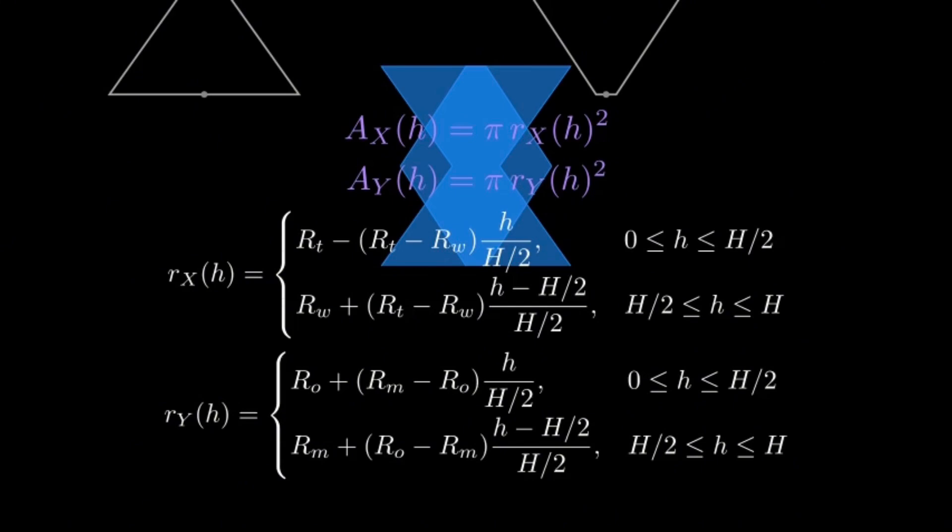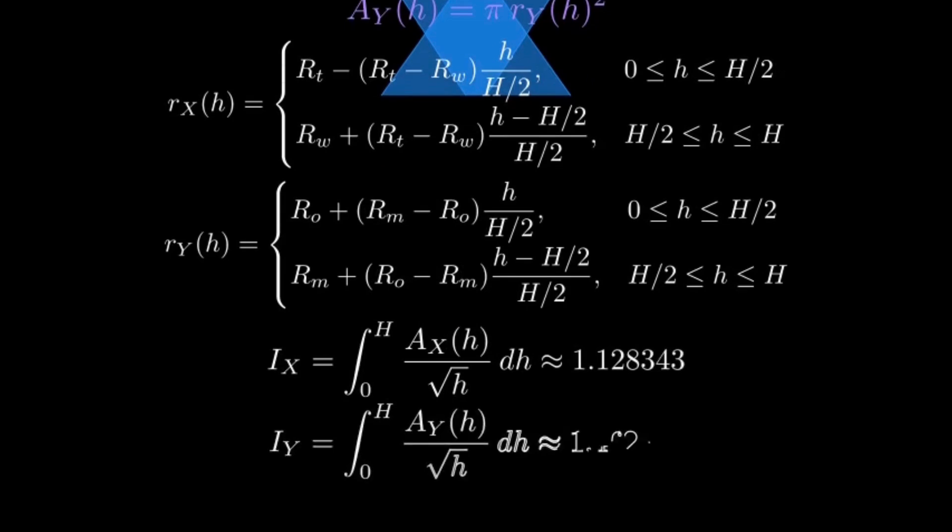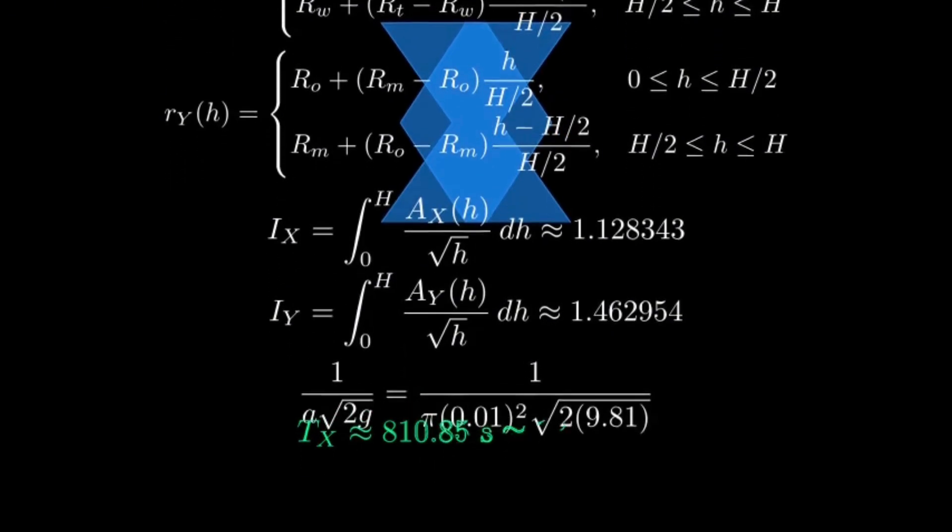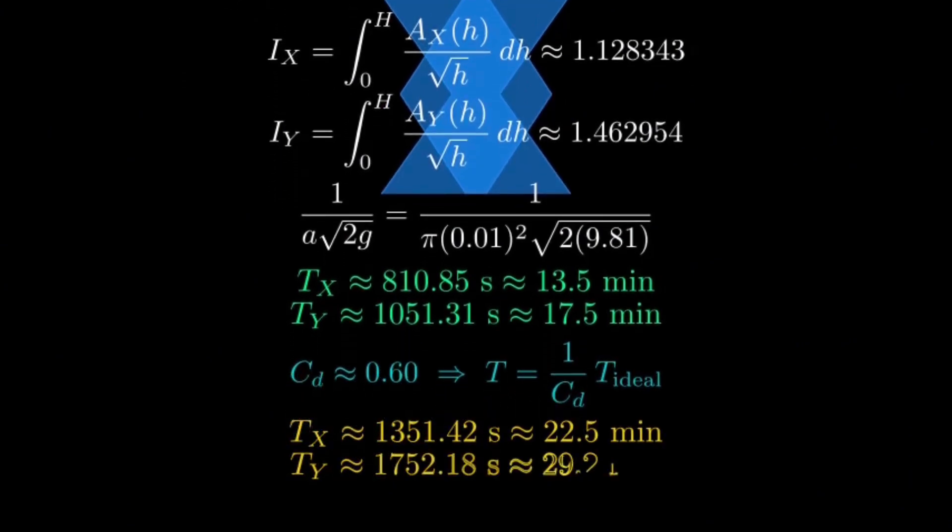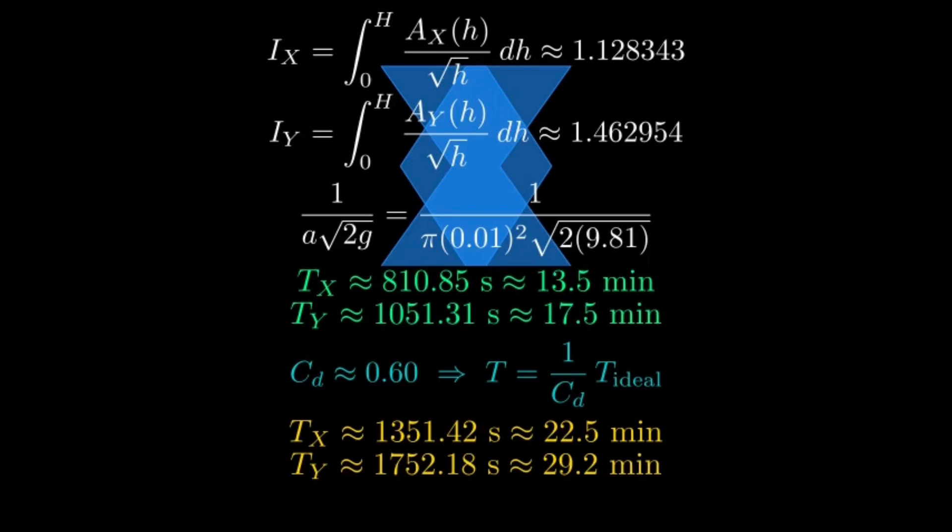We now evaluate the integral of A of H over square root H for each tank. For Tank X, the integral value is approximately 1.12834. For Tank Y, it is approximately 1.46295. The pre-factor 1 over square root 2G uses A equals pi times 0.01 squared, and G equals 9.81, which gives the time scale. Using these, the ideal emptying times are T sub X equals 810.85 seconds, which is about 13.5 minutes, and T sub Y equals 1051.31 seconds, about 17.5 minutes.